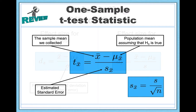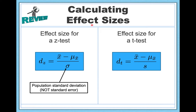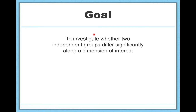As one last bit of review, you also learned about the effect sizes for the one-sample z-test and the one-sample t-test. From here on out, we're going to continue with that trend — learning about a hypothesis test and then learning about the effect size associated with that test. Our goal for this video is to investigate whether two independent groups differ significantly along a dimension of interest.